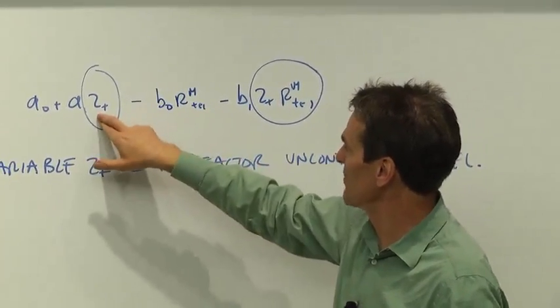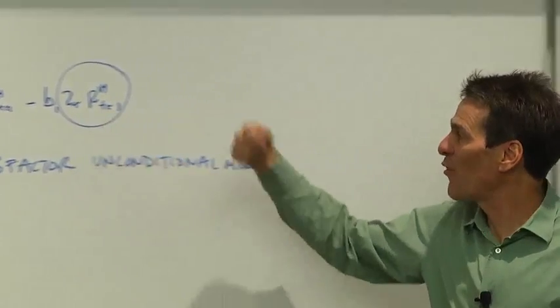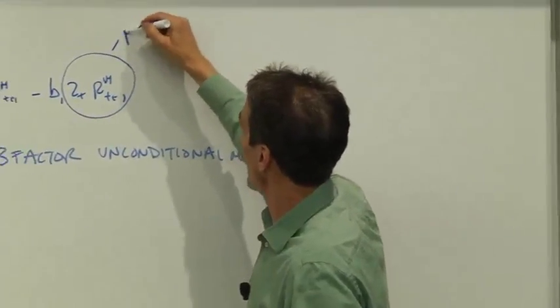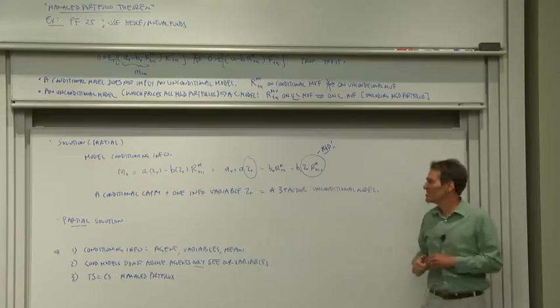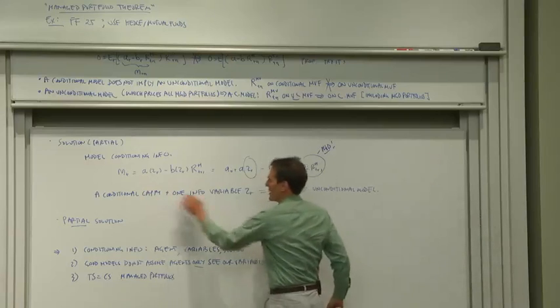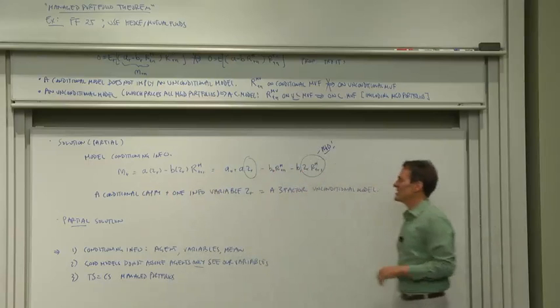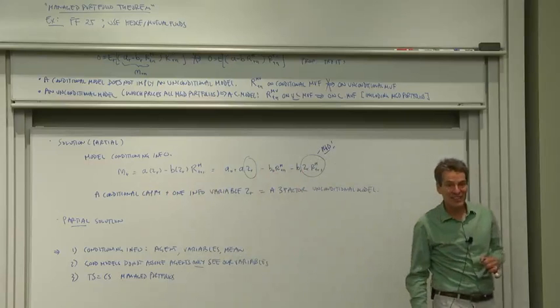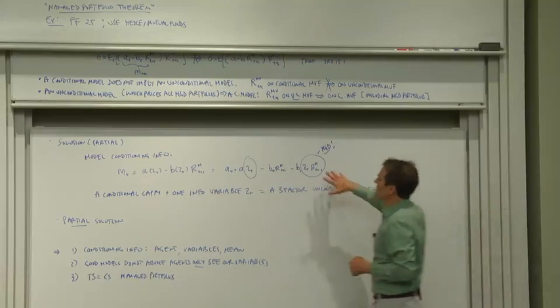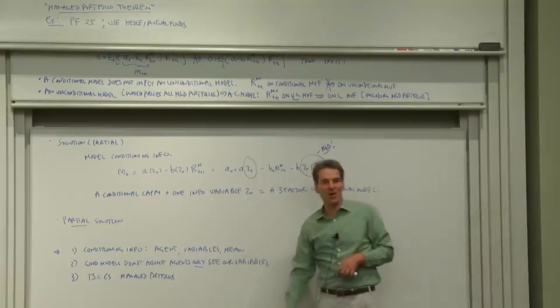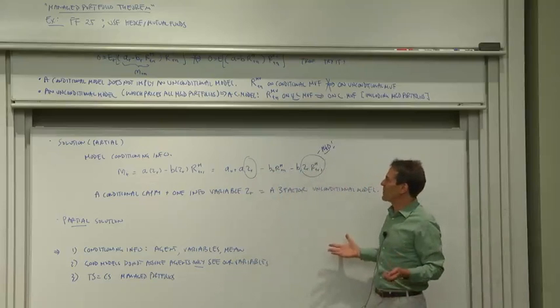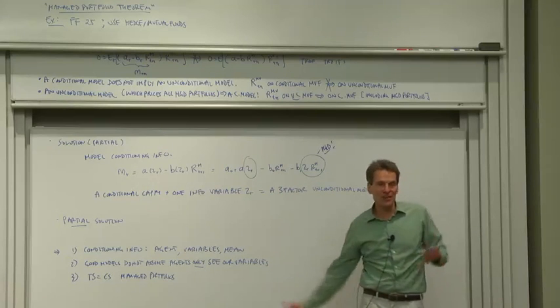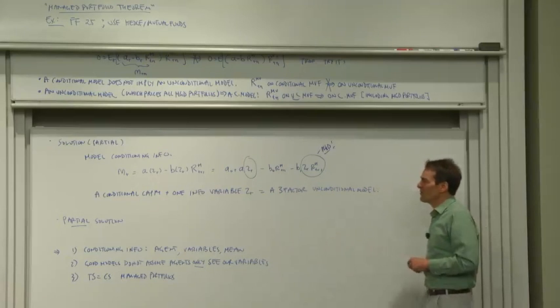now M is a linear function of also the variable ZT and the product ZT times RM, or that's another managed portfolio in itself. So a conditional CAPM and one information variable ZT is equivalent to an unconditional three-factor model. And that's an interesting view on where multi-factor models may come from. Multi-factor models may just reflect conditioning information driving around the parameters of an ultimately conditional one-factor model.